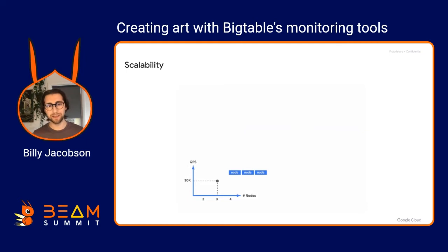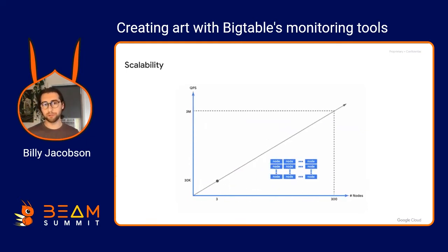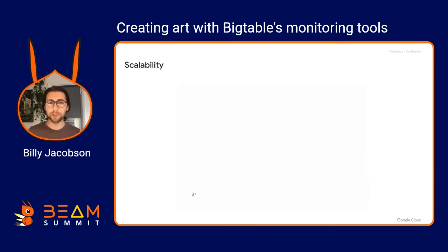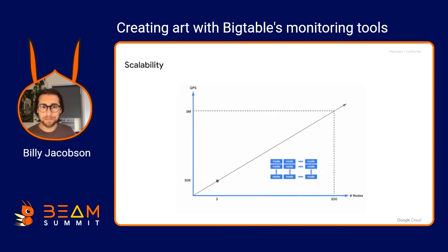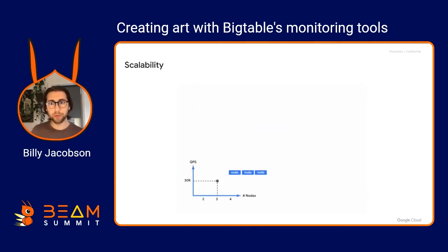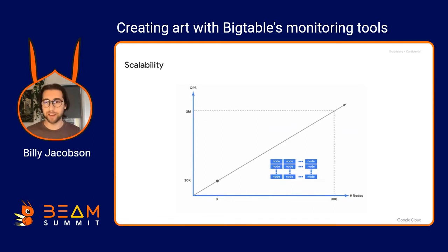Bigtable's main feature is scalability. You start with three nodes and get around 30,000 QPS and around 7.5 terabytes of storage on SSD. But if you need more — if you're scaling your application up or your business is growing — you can add more nodes and those numbers scale linearly to basically any of your application's needs. You can also do it on the fly: scale your Bigtable nodes up before a Beam pipeline run and scale back down once the job is done.